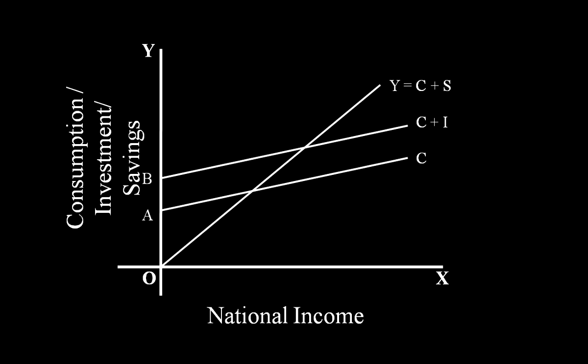The Aggregate Demand Curve C + I intersects the Aggregate Supply Curve Y = C + S at point E1. At this point, the economy is in equilibrium, and the equilibrium level of national income is Y1.